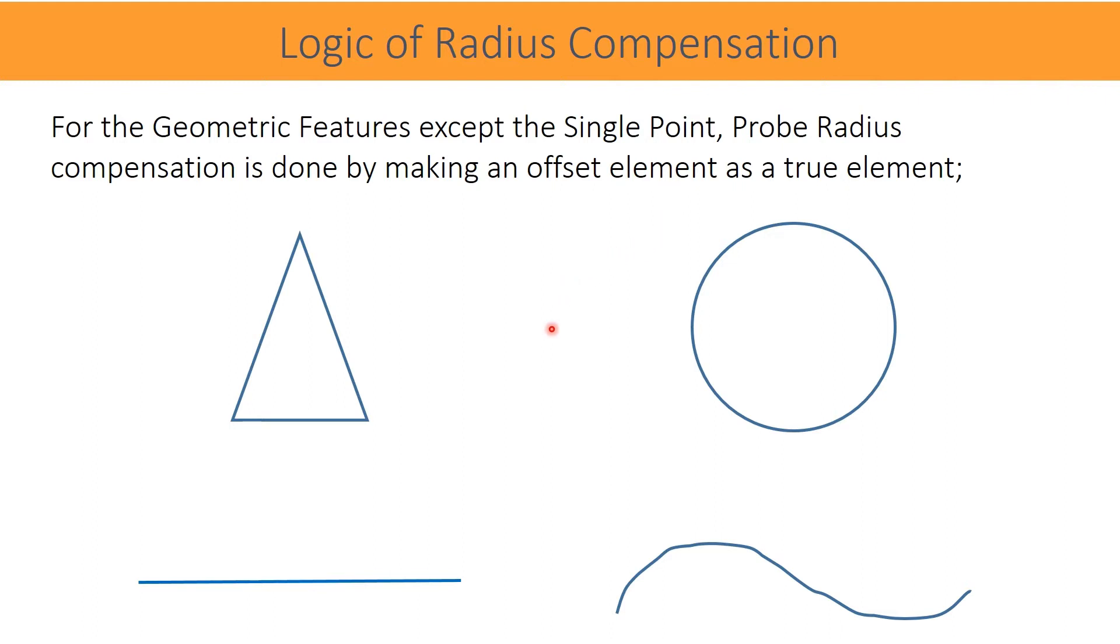This is a straight surface. For an example, let us discuss. Points are measured with the stylus. Software passes a feature through all the centers. After construction of the feature, it is offset by a probe stylus radius value. This is the easiest method of radius correction by offsetting a complete feature.